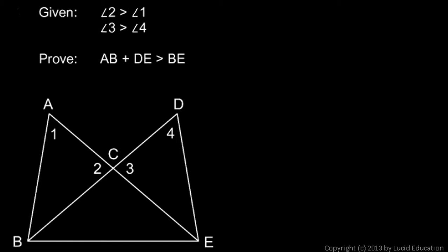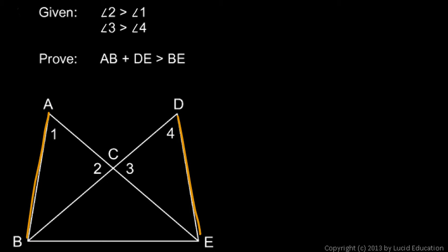Here's another problem. The diagram has points A, B, C, D, and E. Four of the angles are marked, and we're told that angle 2 is bigger than angle 1. Angle 2 right here is bigger than angle 1. And we're told that angle 3 is bigger than angle 4. We're trying to prove that AB plus DE is larger than BE.